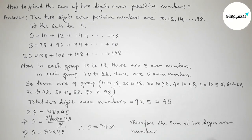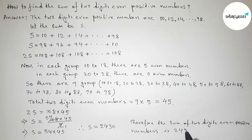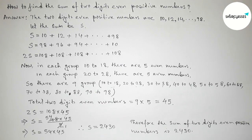Therefore, the sum of all two-digit even positive numbers is 2430. That's all — thanks for watching, please share it with your friends.